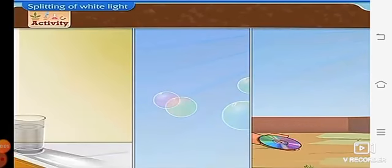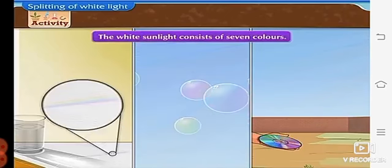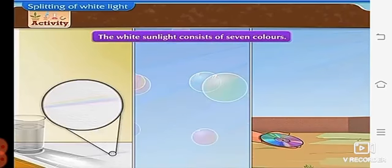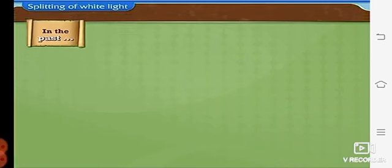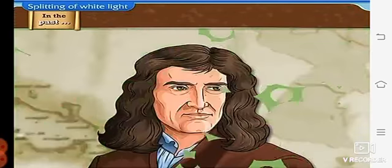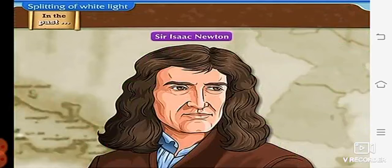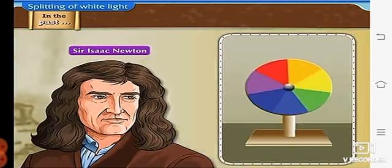So, all these activities tell us that the white sunlight consists of seven colors. In the past, the British scientist Sir Isaac Newton made a special disc.